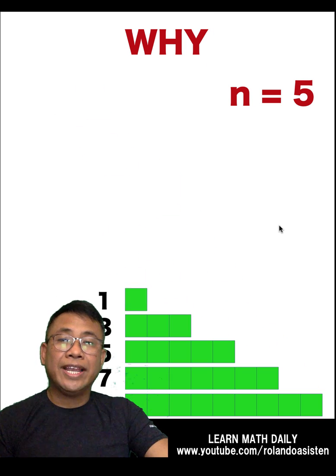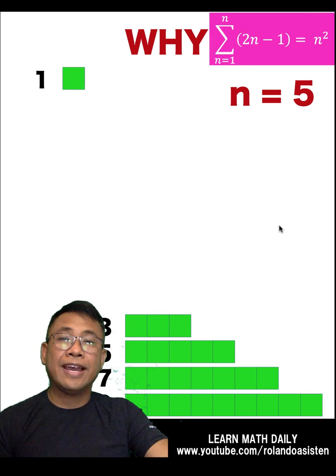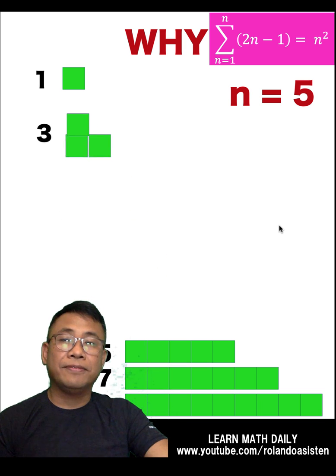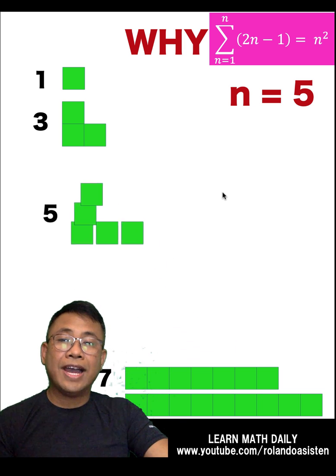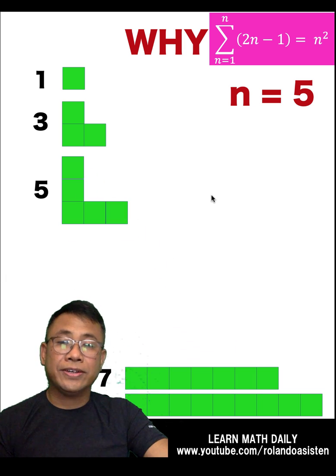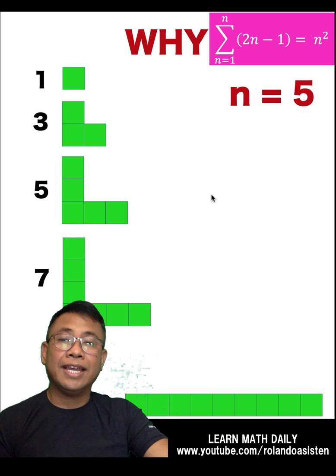Now, let's rearrange the squares so that we can have an L-shaped formation. So, 1 is represented this way. 3 is represented as an L-shaped figure. 5, also an L-shaped figure. The same with 7 and with 9.